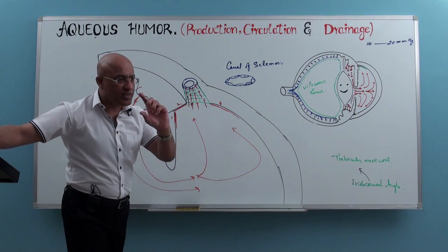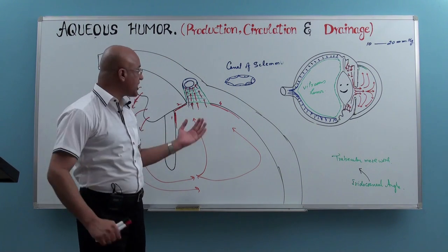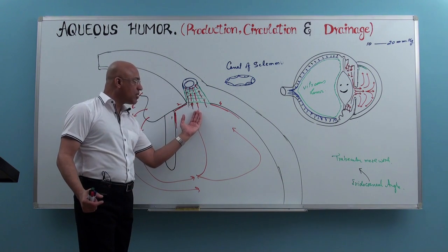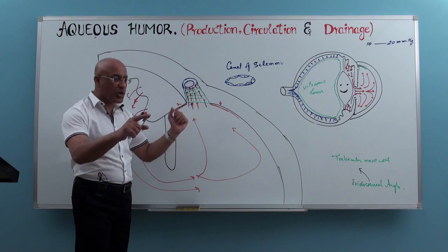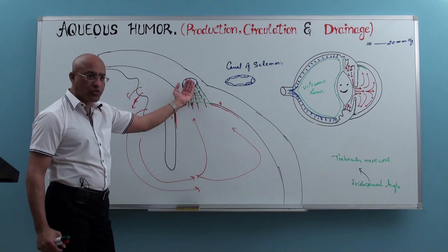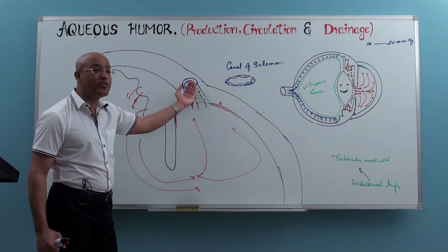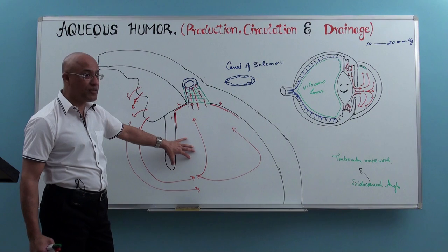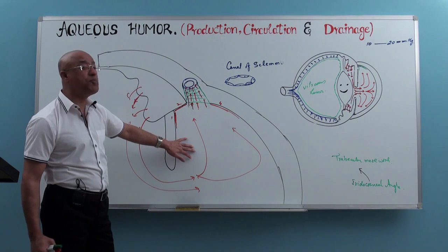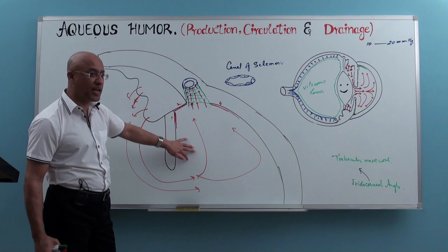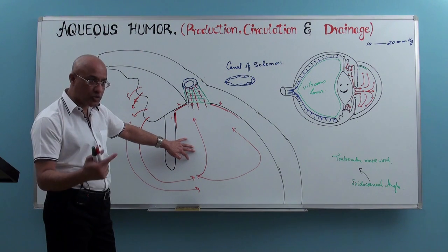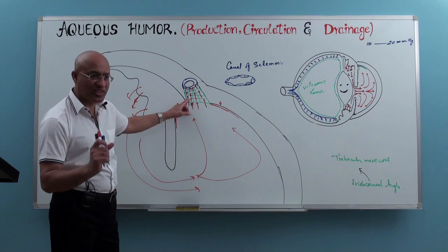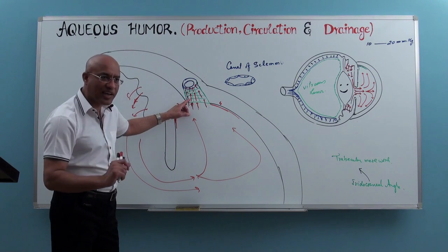When talking about the drainage mechanism at the iridocorneal angle, there is the trabecular meshwork. As the canal of Schlemm is circular, the trabecular meshwork is also all around it, so aqueous humor has to pass through the trabecular meshwork. Here is one very important point.